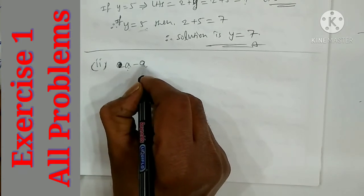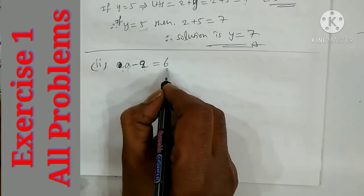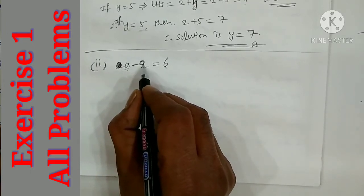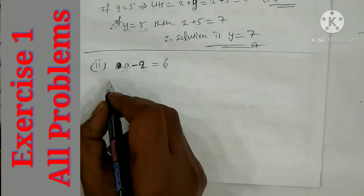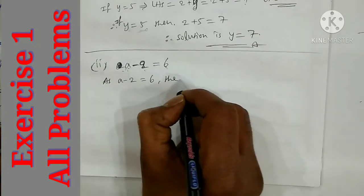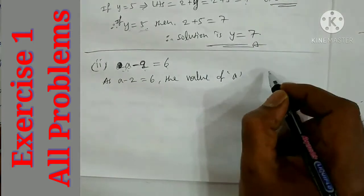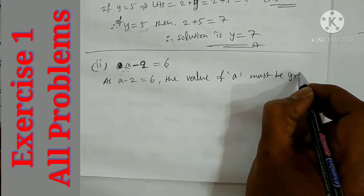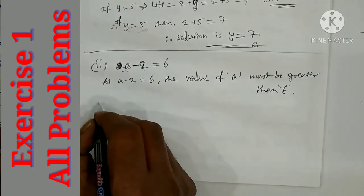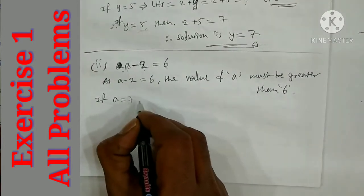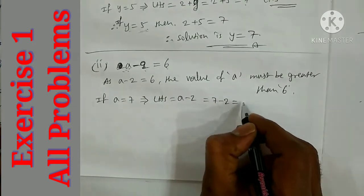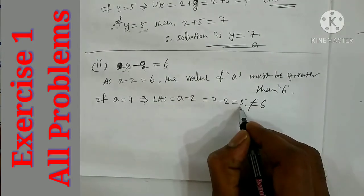Next equation: a minus 2 is equal to 6. The value of a must be greater than 6. If a is equal to 7, then LHS is equal to a minus 2, that is 7 minus 2 equal to 5. This is not equal to 6, so LHS is not equal to RHS — that is wrong.